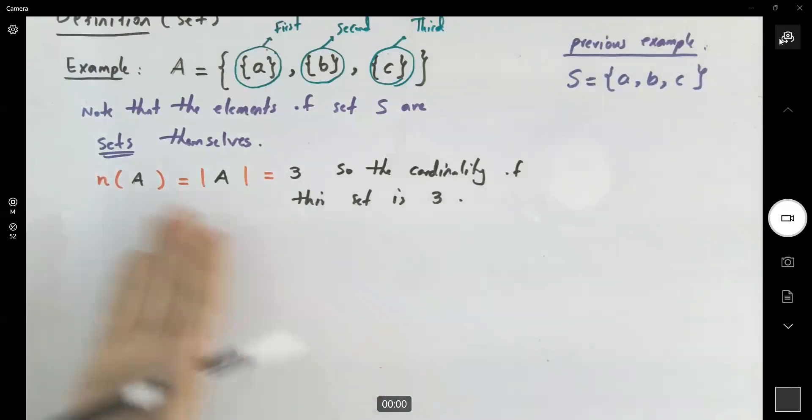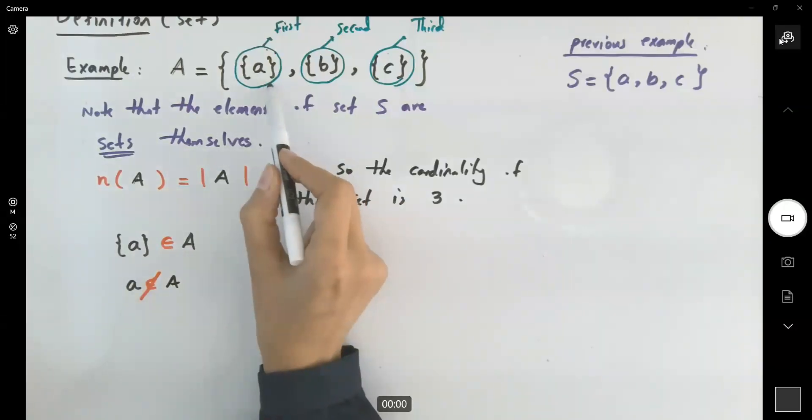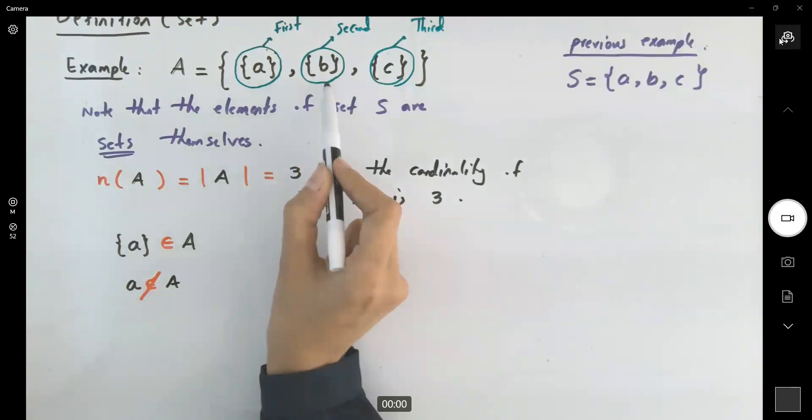So, we talked about the members of this set. We're going to say that the set including a is a member of set A. Guys, you cannot write a as a member of set A. A itself is not a member of A. Just make sure you are using a proper symbol. This is the first member. This guy as a set is the second member. This guy as a set is the third member.